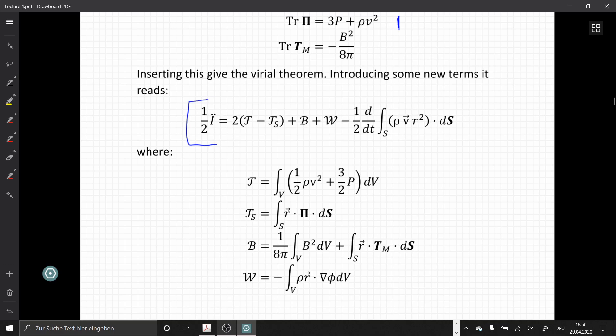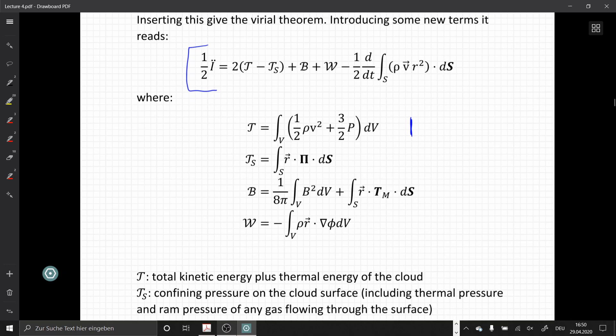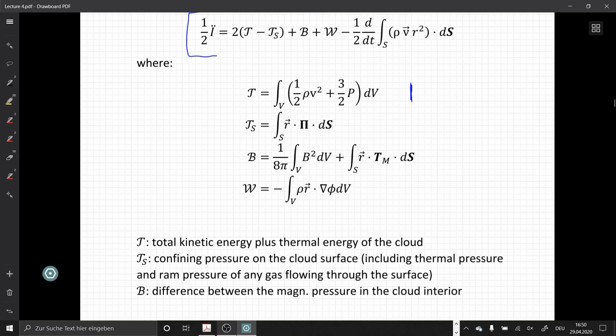Here we added some additional abbreviations, some definitions. So T is given by the volume integral of half rho velocity squared plus three half p, which is just the total kinetic energy in our cloud plus the thermal energy of the cloud. So T is the full kinetic energy. TS is defined with the pi tensor here and it's basically the confining pressure on the cloud surface, including thermal pressure and ram pressure, that is pressure of any gas flowing through this surface from the inside to the outside or from the outside to the inside. So that's the surface term.